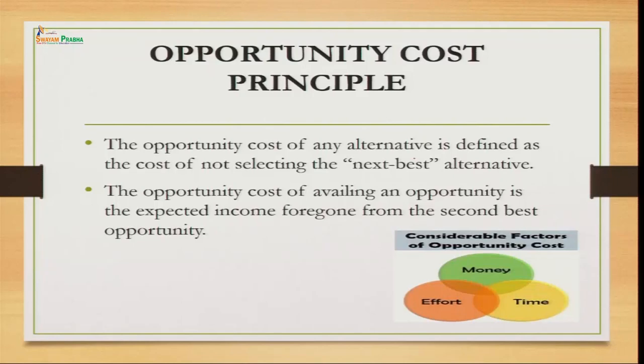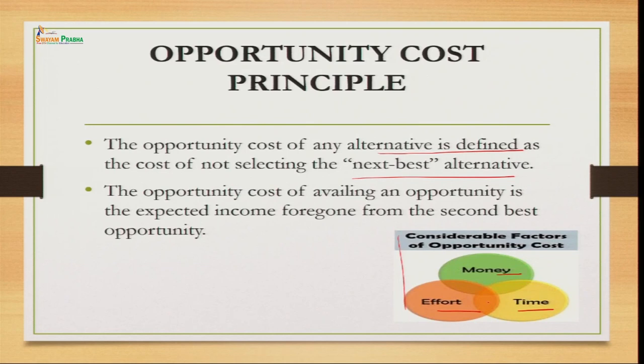Looking at the diagram, every opportunity cost has factors in terms of money, time, and effort. Whatever we are doing right now compared to what we could have done — we need to make that comparison. If we are doing something right now, we are not able to do another thing at the same time. This concept is not applicable where we have no alternatives, but if alternatives exist we must choose one.